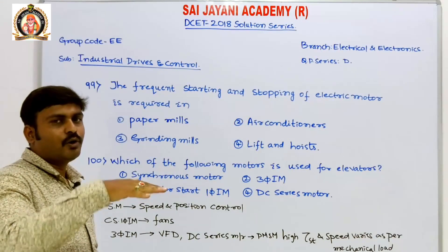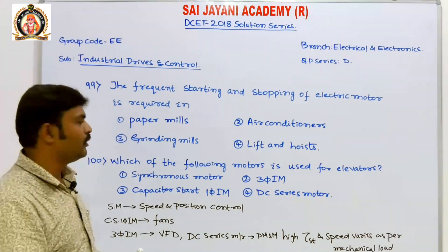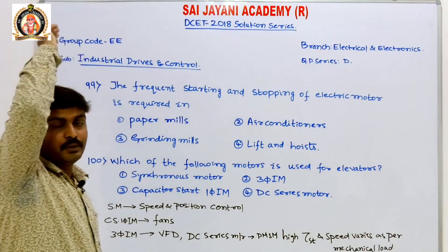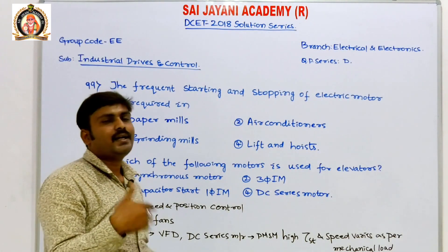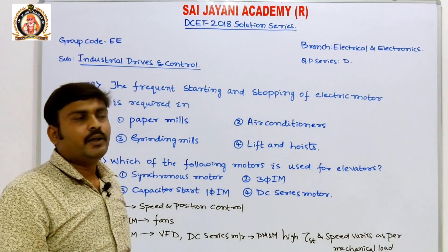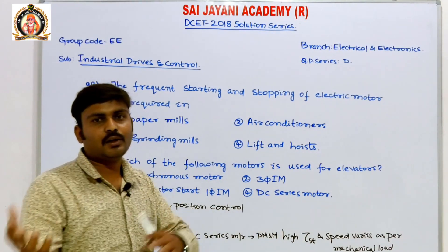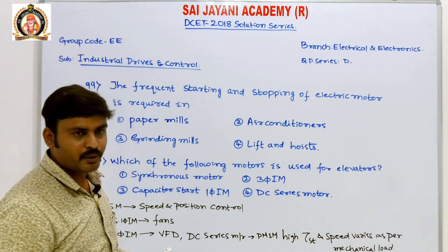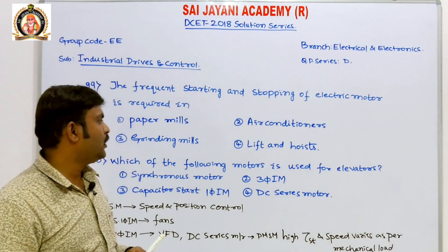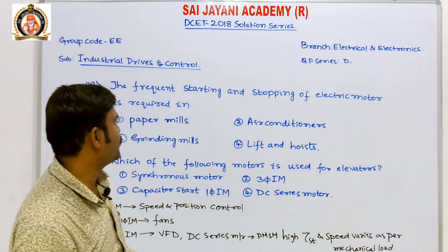If you are on the first floor and need to go down, you push the down button, the lift goes there, and again the lift has to come up. Frequently the motor will be starting and stopping. In hoists also — hoists are used in industrial cranes in order to move objects or machines to be assembled or moved from one place to another. Hoists have push buttons, and jogging can be achieved using jogging push buttons in the hoists.